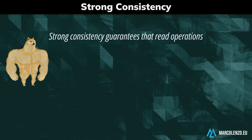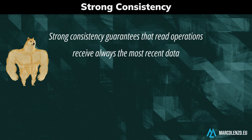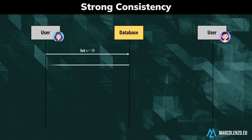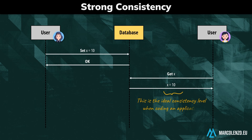Strong consistency guarantees that all read operations receive always the most recent data. Let's imagine we're storing a simple integer on a database. If one user updates its value, other users are guaranteed to see the updated value afterwards. This is the ideal scenario when building an application, and it's also expected in a monolithic setup where all the data is stored in a single node.